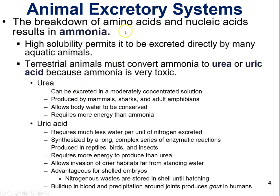Metabolic waste products are formed from the breakdown of amino acids and nucleic acids, resulting in the formation of ammonia. There's also breakdown of other metabolic waste excreted in the urine. We particularly focus on amino acids and nucleic acids because they produce ammonia. Ammonia is toxic and must be converted to urea or uric acid right away.